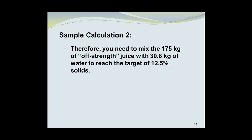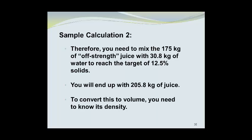Therefore, you need to mix 175 kilograms of the off-strength beverage with 30.8 kilograms of water to reach the target value of 12.5% solids. This means that you will end up with 205.8 kilograms of juice. To convert this to a volume, you need to know its density, and we're not going to go into that in this presentation.